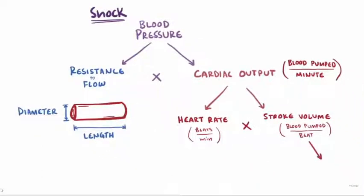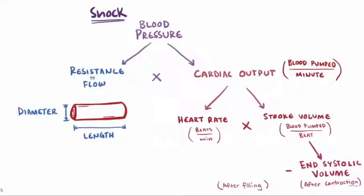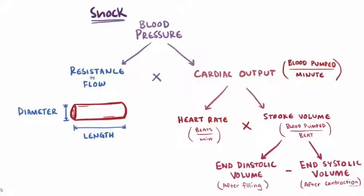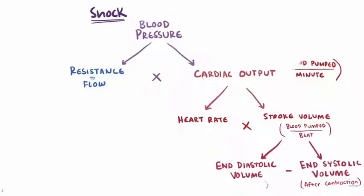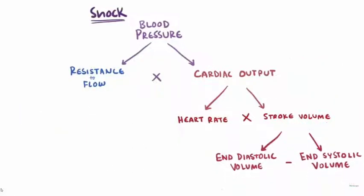Stroke volume is found by taking the total volume of blood left over after contraction (end-systolic volume) and subtracting it from the total volume in the heart after filling (end-diastolic volume). Shock can be caused by many different things, but we can categorize the different types into three main categories with some subcategories.